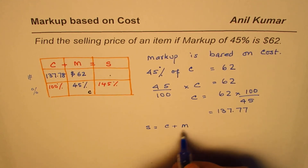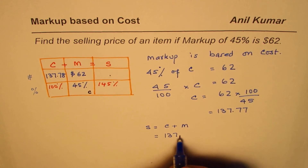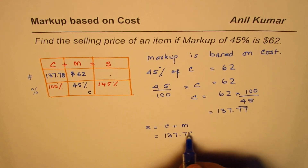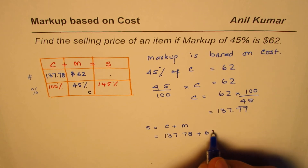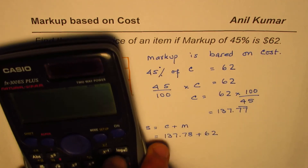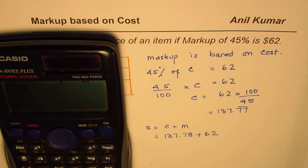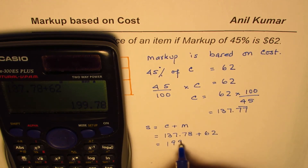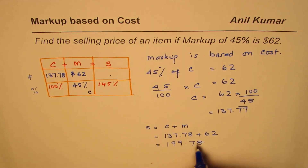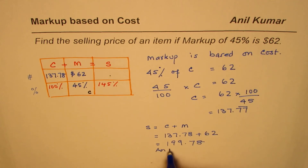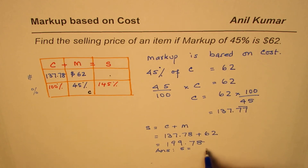If the cost is $137.78, the selling price should be cost plus markup, so it is 137.78 plus 62. Adding these two gives us $199.78. So the selling price is equal to $199.78.